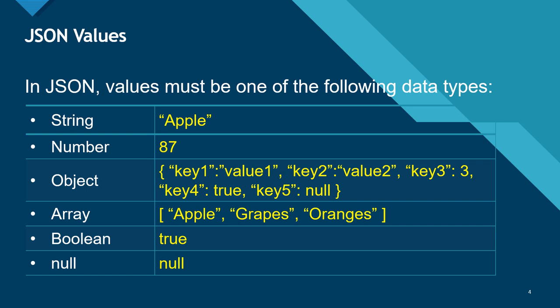Now we will see what can be values. The values in JSON can be a string, a number, an object, an array, a boolean, or null.